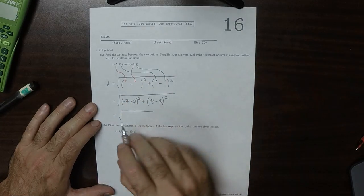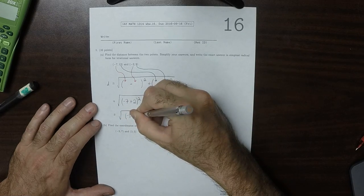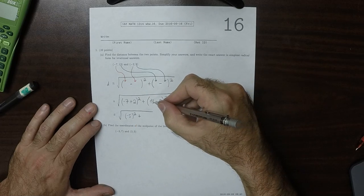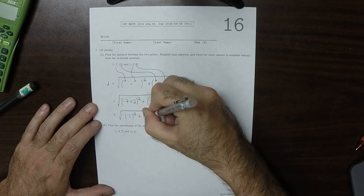So that would be negative 5 squared, and then plus 13 minus 8, that's 5 squared.